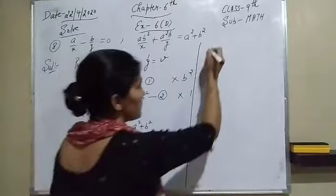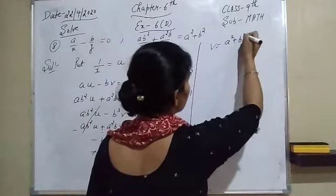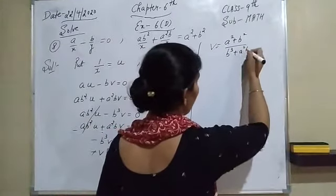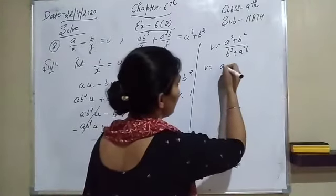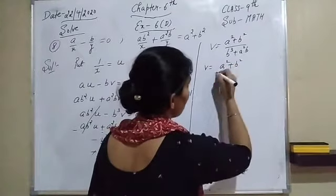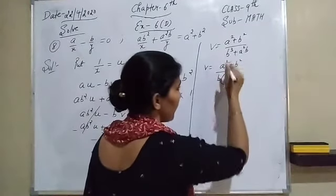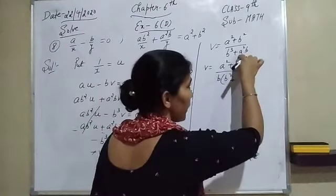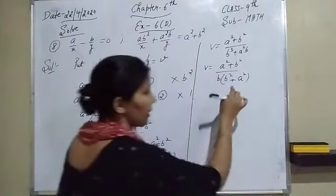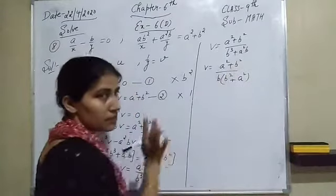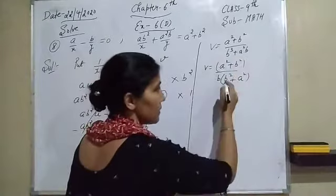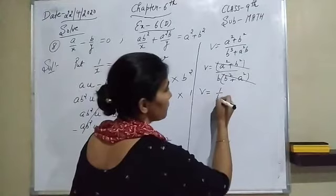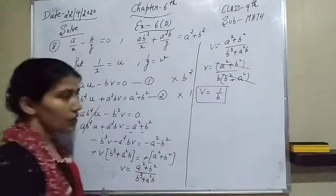Since (a² + b²) appears in both numerator and denominator, they cancel. Therefore the value of v is 1/b.